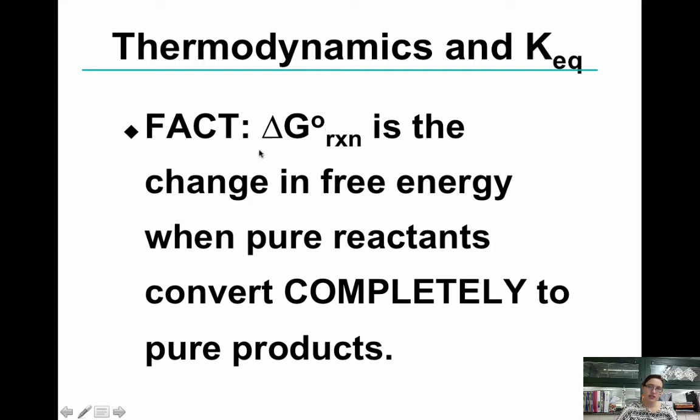Remember when delta G is positive, the reaction is not spontaneous, which means that the reaction will not proceed on its own, so the reactants are favored. If delta G is negative, then the reaction is spontaneous, it happens on its own, and products would be favored. And if delta G is equal to zero, then we're at equilibrium.